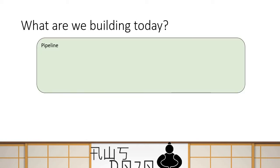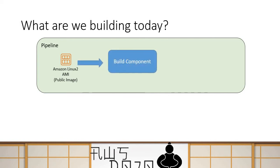These are the basics you need to perform your pipeline creation. If you don't understand much, don't worry — we are going to do that as part of the exercise. So let's see what we are going to build today. We will start with a Linux 2 image as a public source image, and then write a custom build component that converts it into an image which has Python Boto3 SDK installed. The purpose here is to understand how the pipeline works.